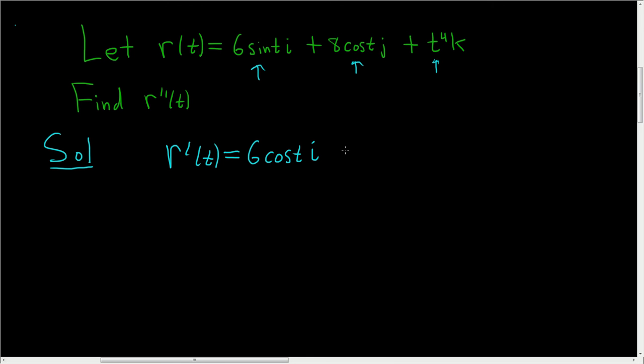And the derivative of cosine is negative sine. So this is negative 8 sine t j. And here we can use the power rule. We'll bring the 4 downstairs. So we get plus 4 t cubed k.